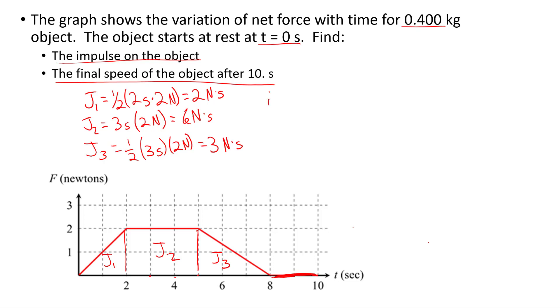That means our total impulse is just the sum of them, 2 plus 6 plus 3 newton-seconds, which is 11 newton-seconds.